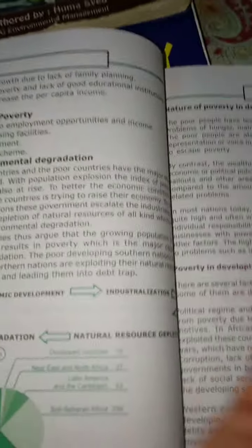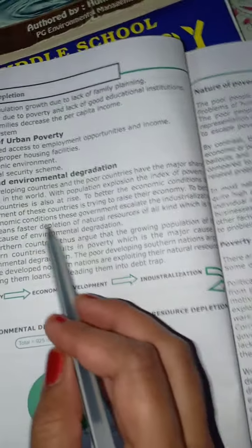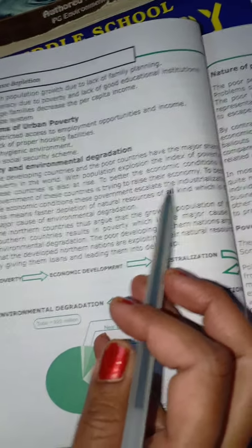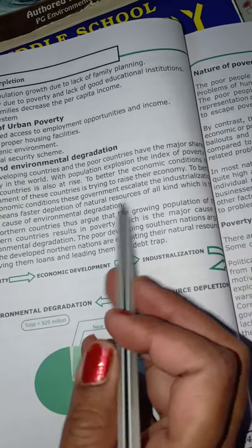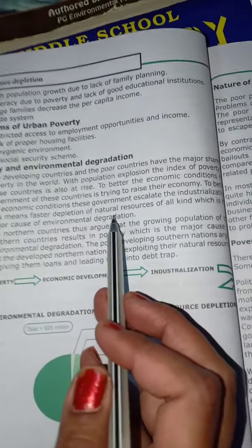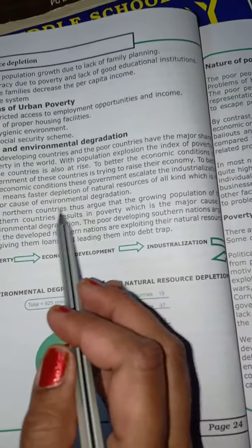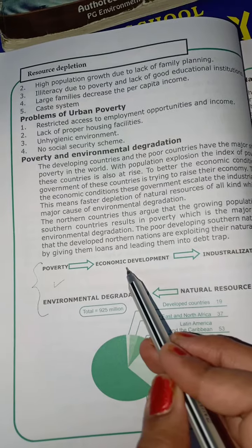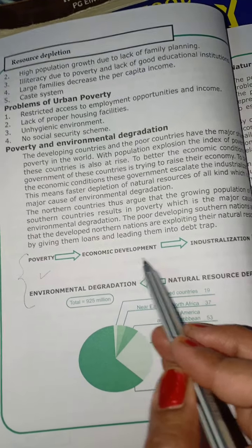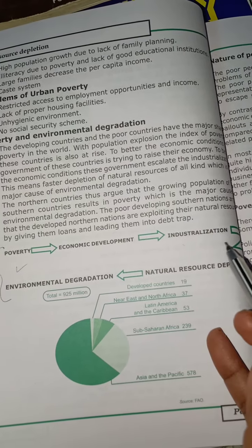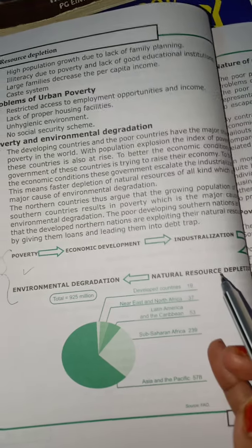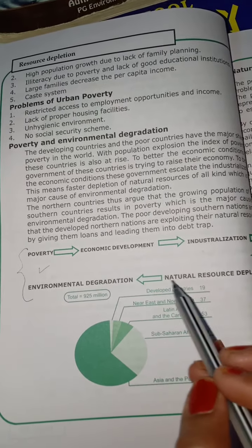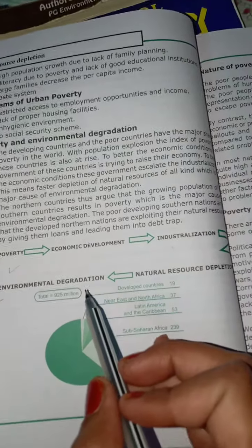To better economic conditions, the government tries to raise the economy by setting up more industries, which causes faster depletion of natural resources and causes environmental degradation. The key chain is: poverty requires economic development, which requires industrialization, which causes natural resource depletion, and finally that depletion causes environmental degradation.